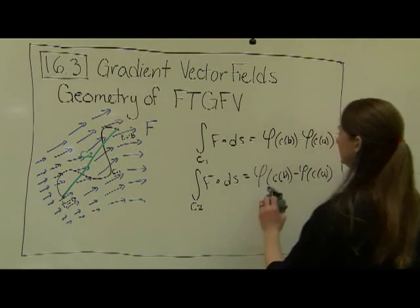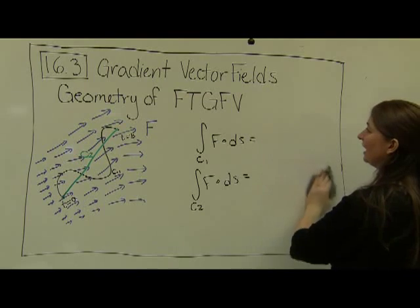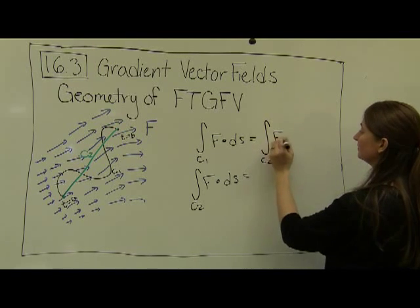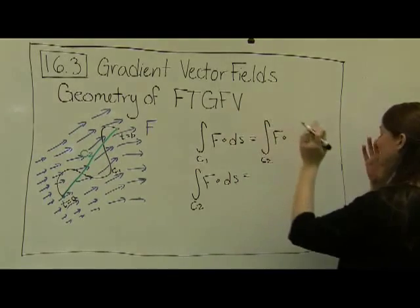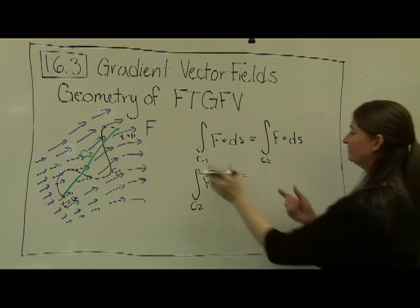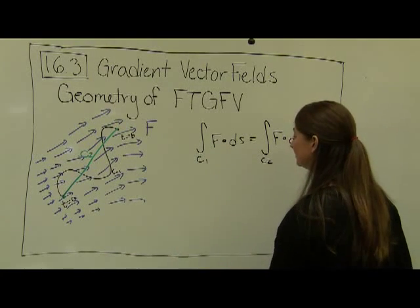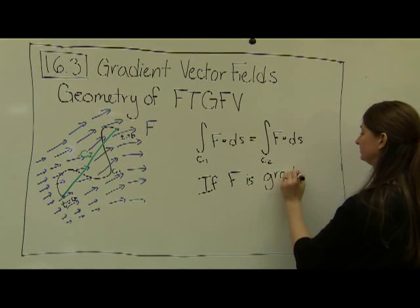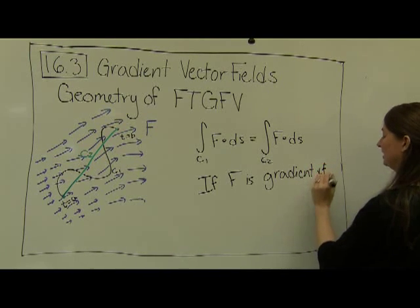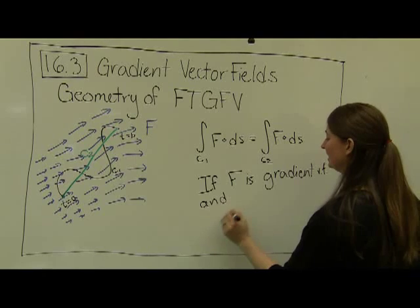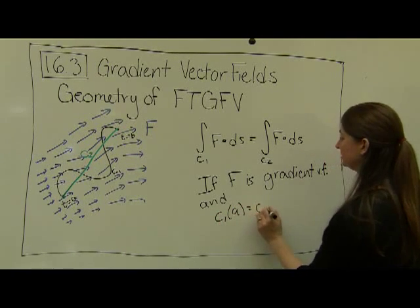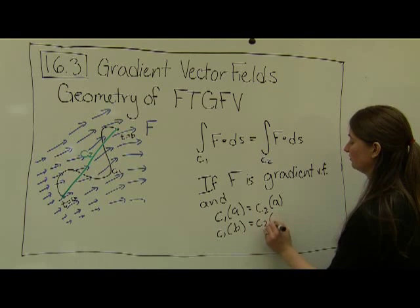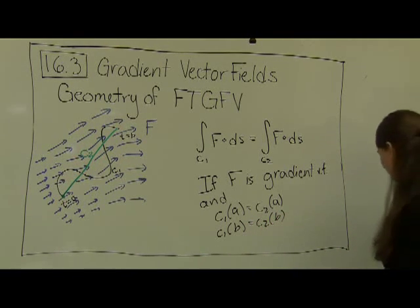And maybe I should write that down as an interesting result. The interesting result is, if F is a gradient vector field, then we will always have the case that the vector line integral of this path and this path will be equal to each other if F is a gradient vector field, and we also have to have that c1 of a is equal to c2 of a, meaning they both have to start in the same place, and c1 of b has to be equal to c2 of b. They both have to end in the same place. And it really doesn't matter what path we take.